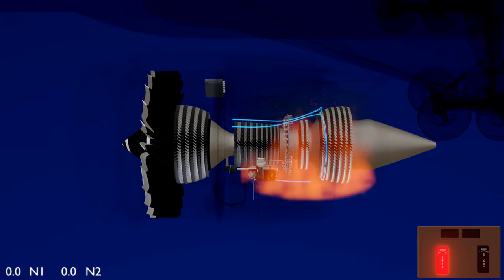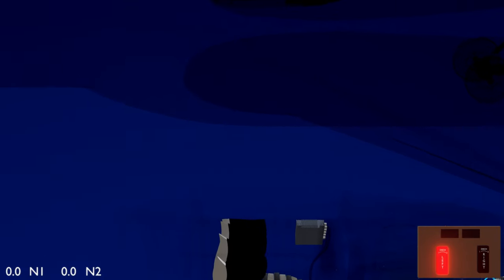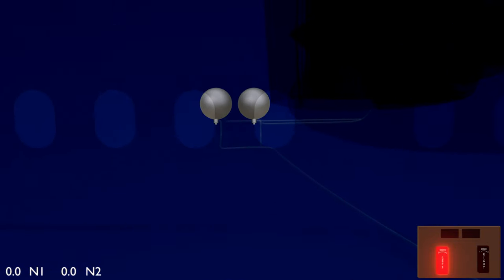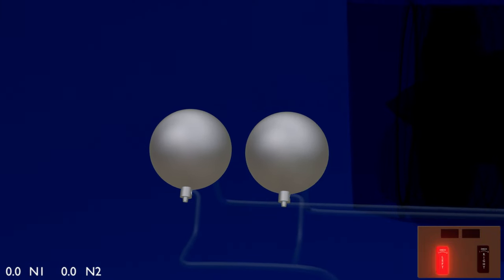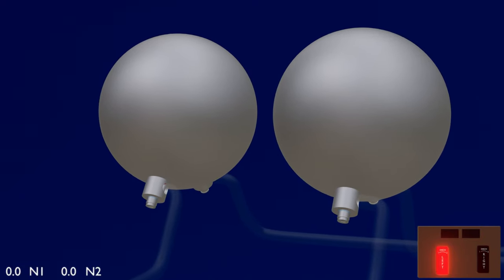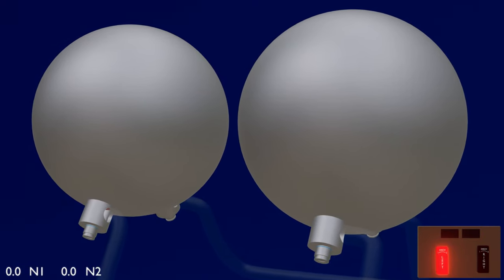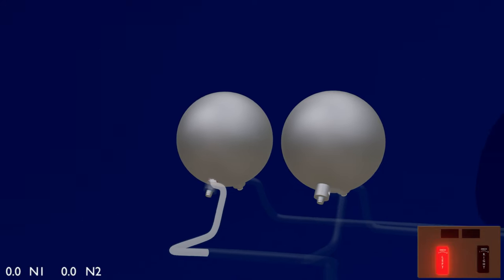If the condition still persists, the engine fire extinguishing system must be used. Two extinguisher bottles are located in the cargo compartment of the aircraft. A single fire bottle has two connections, one for each engine. To use the number one fire bottle, the left engine fire switch needs to be turned in the left direction. Electric current is now sent to activate the squib on the bottle. A squib is a miniature explosive device that once activated ruptures the diaphragm of the fire bottle.